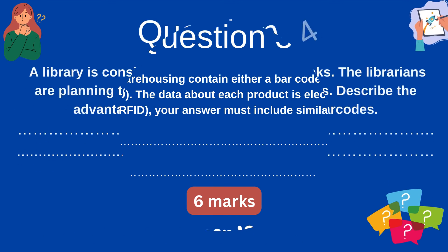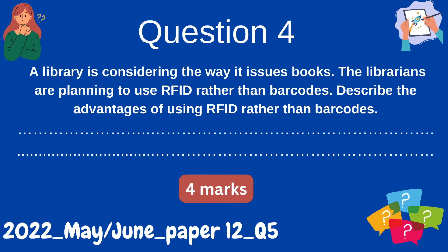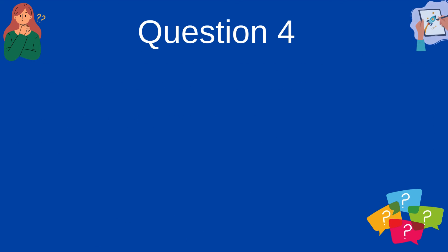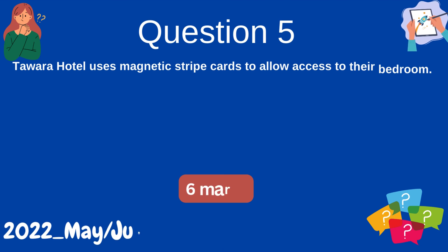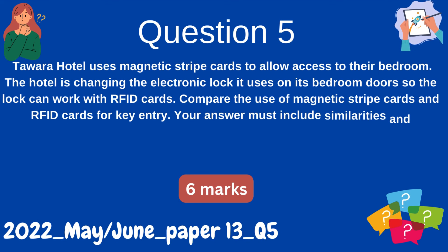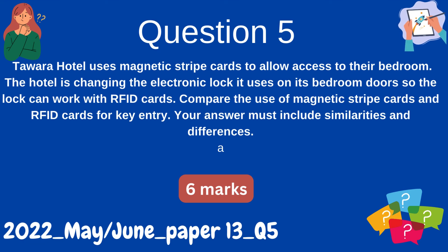Question 4: A library is considering the way it issues books. The librarians are planning to use RFID rather than barcodes. Describe the advantages of using RFID rather than barcodes. Question 5: Tawara Hotel uses magnetic stripe cards to allow access to their bedrooms. The hotel is changing the electronic lock on its bedroom doors so the lock can work with RFID cards. Compare the use of magnetic stripe cards and RFID cards for key entry. Your answer must include similarities and differences.